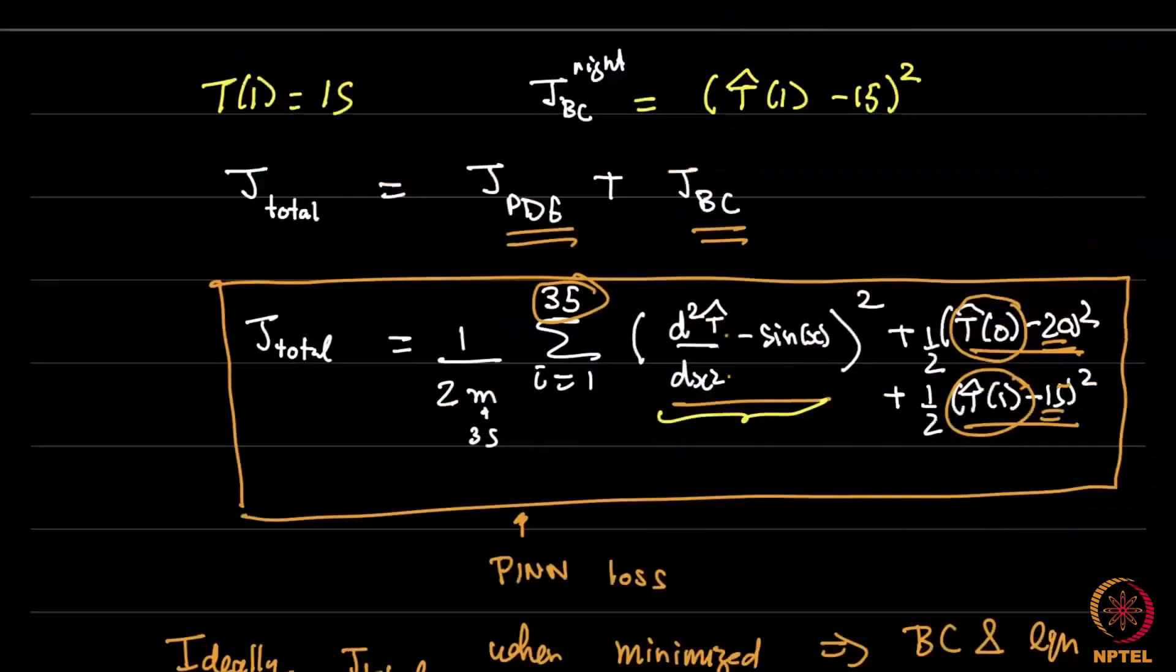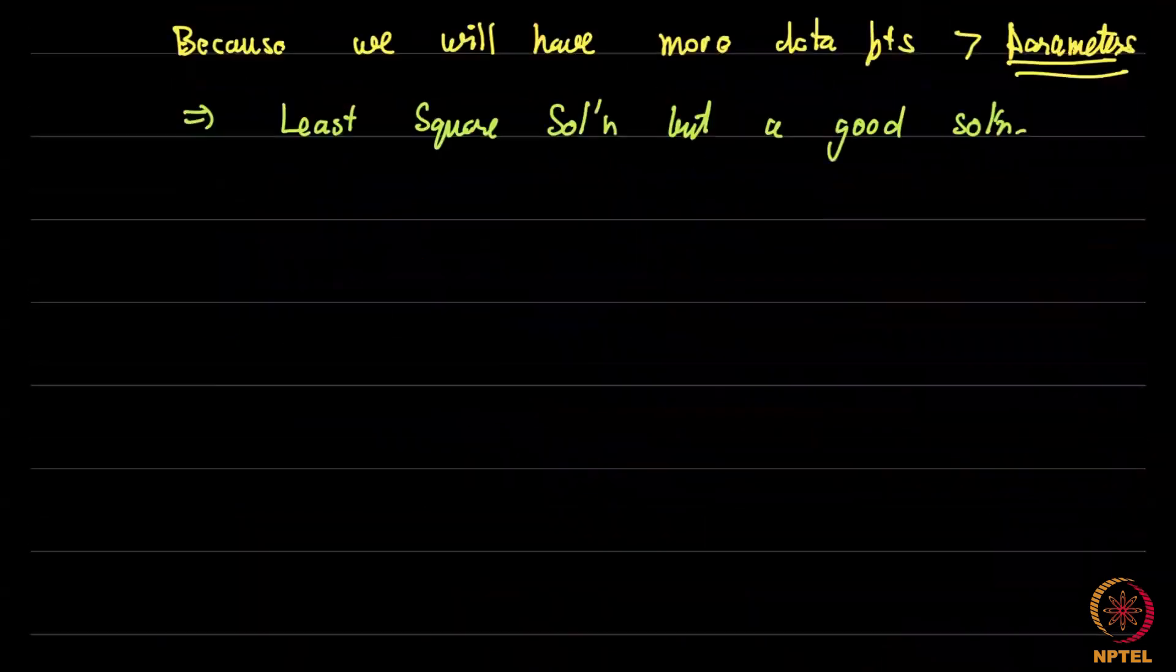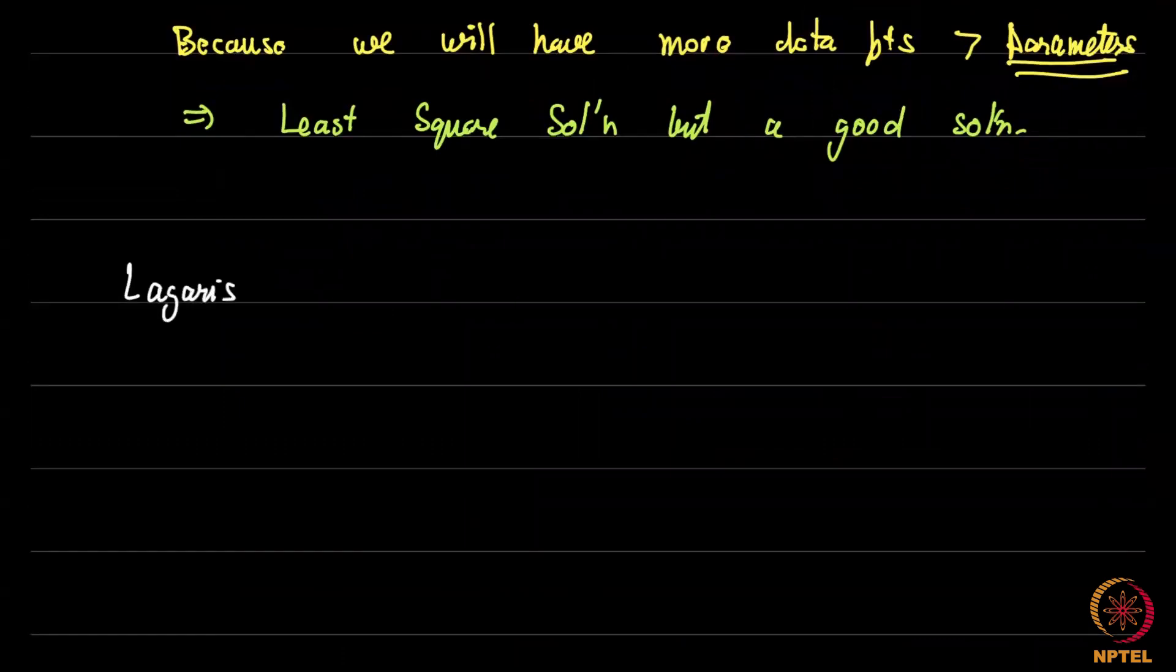Now this idea of adding J_PDE plus J_BC was a particular contribution of the Raissi and Karniadakis 2019 paper. I will shortly show it to you. There was another idea which was by Lagaris. This is the original idea from 1997. This idea was that J is just equal to J_PDE but boundary conditions are imposed exactly. Now, how do we do that?